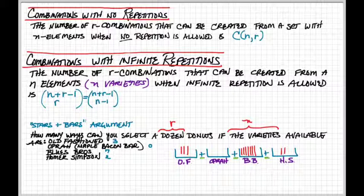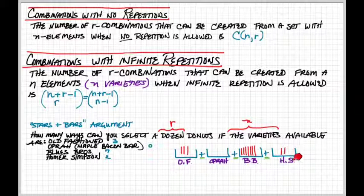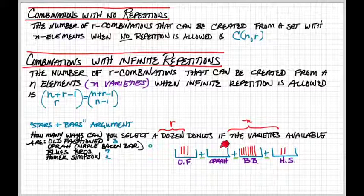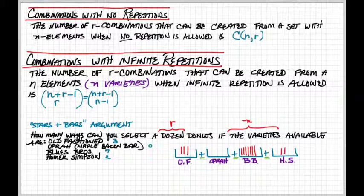So you can think about your box of donuts as being broken down into four sub-varieties. So if you happen to want three old fashions, here's my old-fashioned box, my Oprah box, my Blue's Bros box, and my Homer Simpson box. So I can imagine three of the donuts are old fashions, no Oprahs, seven Blues Bros, and two Homer Simpsons.